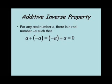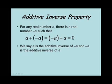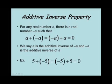Now we'll take a look at the inverse properties, starting with the additive inverse property. This says for any real number a, there's a real number negative a, such that a plus negative a equals negative a plus a equals 0, the additive identity element. We say a is the additive inverse of negative a, and negative a is the additive inverse of a. For example, 5 plus negative 5 equals negative 5 plus 5, which equals 0. Here, 5 was a, and negative 5 is negative a.